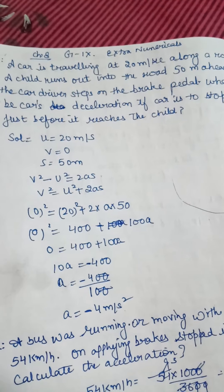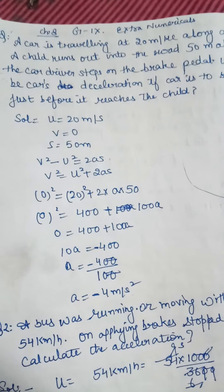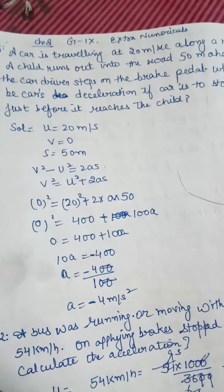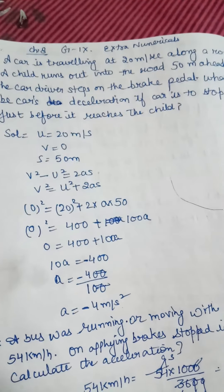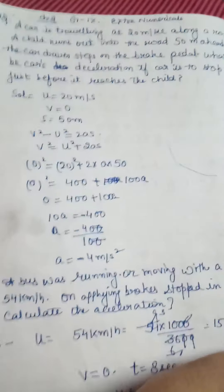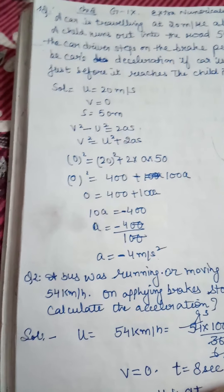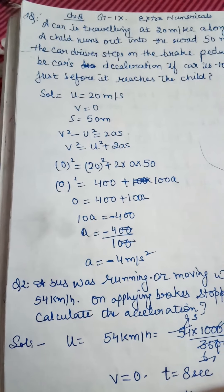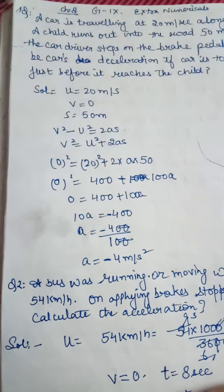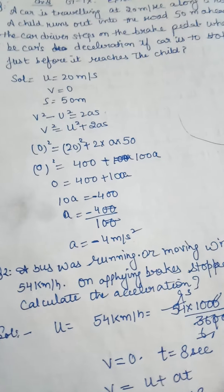What we have to find out is what was the retardation, what was the deceleration of the car if the car stopped at the front of the child. The initial velocity given was 20 m/s, final velocity 0, distance 50 meters. Using the formula v² = u² + 2as, we get acceleration of minus 4 meters per second squared.